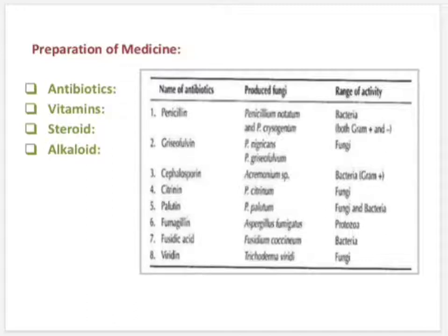Steroids. Rheumatoid arthritis, allergy, and some other diseases are controlled by steroids. Many fungi have the capacity to synthesize different steroids. Steroids like cortisone are produced by Aspergillus niger from plant glycosides by fermentation.